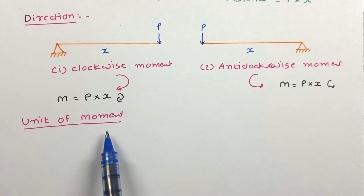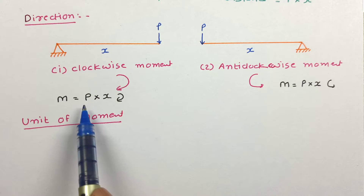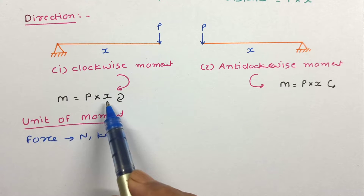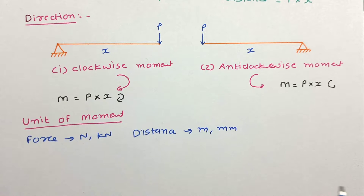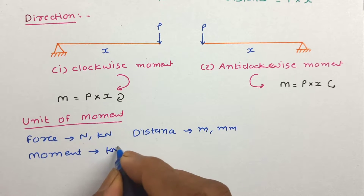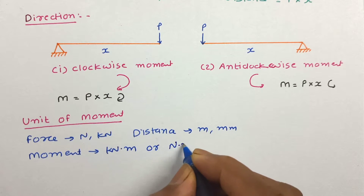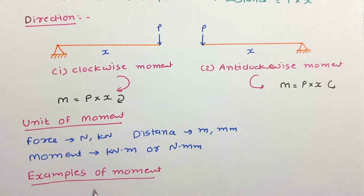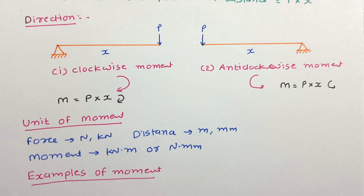The unit of force is newton or kilonewton, and the unit of distance is metre or millimetre. So the unit of moment will be kilonewton·metre or newton·millimetre. Real-world examples of moment include: first, tightening a nut using a spanner; and second, opening or closing a door — in both cases we apply a moment.